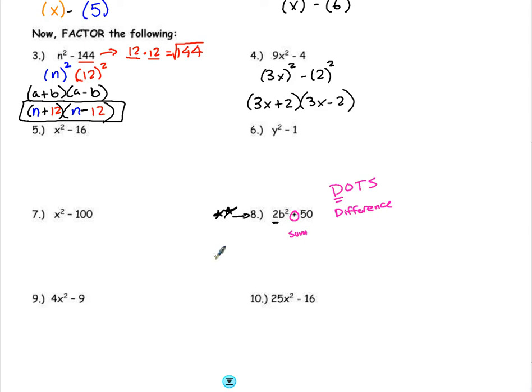When you see this type of pattern recognition and you see a plus there, we cannot use difference of two squares to factor this. Now, is it still factorable? Yes. In the last lesson we talked about factoring with GCF, or greatest common factors. 2b squared and 50—2 has factors of 2 and 1, where 50 has factors of 2 and 25. Since they share a common factor of 2, I can factor out a 2 and get b squared plus 25. But I cannot go any further because it's not a difference of two squares.